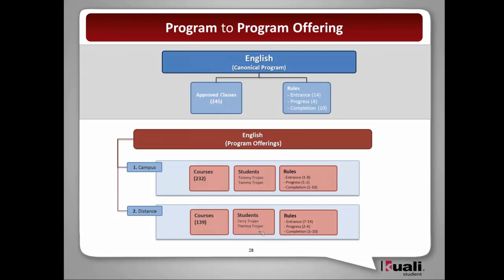Terri and Theresa Trojan will be attached or enrolled in that particular program offering. In this case, they're going to use entrance rules 7 through 14 of the total of 14, progress rules 2 through 4 of the 4, and once again all 10 of the completion rules will be part of the program offering definition for the distance program.